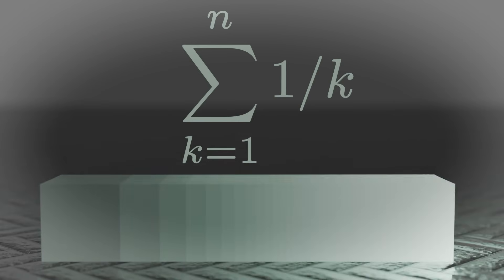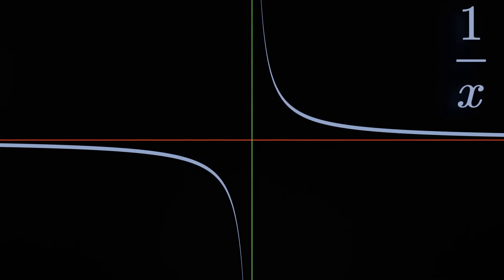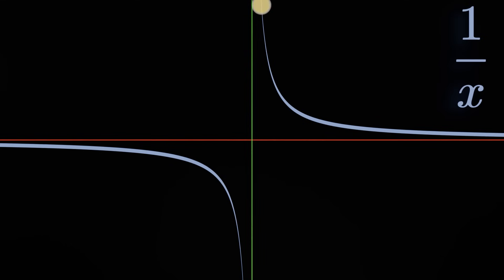So let's start again, this time with 1 divided by x. The function 1/x looks like this on a graph: for x=1 it equals 1, the higher x gets the smaller the number, the lower x gets the higher the number. Simple enough. Now let's ask the question: what is the area under this function?